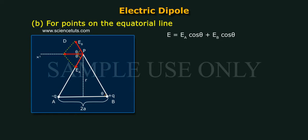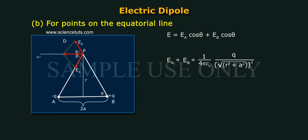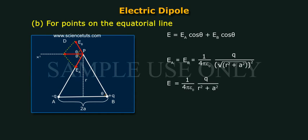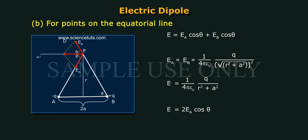E is equal to 2 E_A cos theta, where E_A equals 1 by 4 pi epsilon naught times Q by (R squared plus A squared).